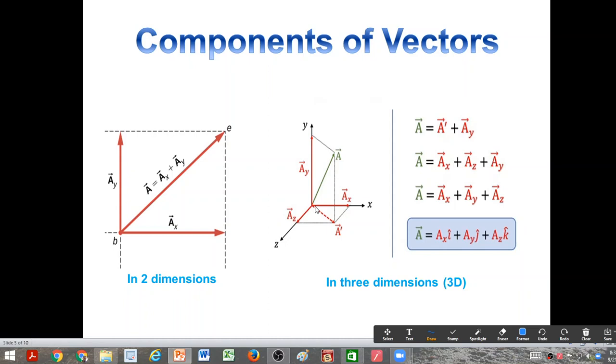So any vector has its components along different axes, and the sum of the components gives us the resultant vector, as can be seen here.